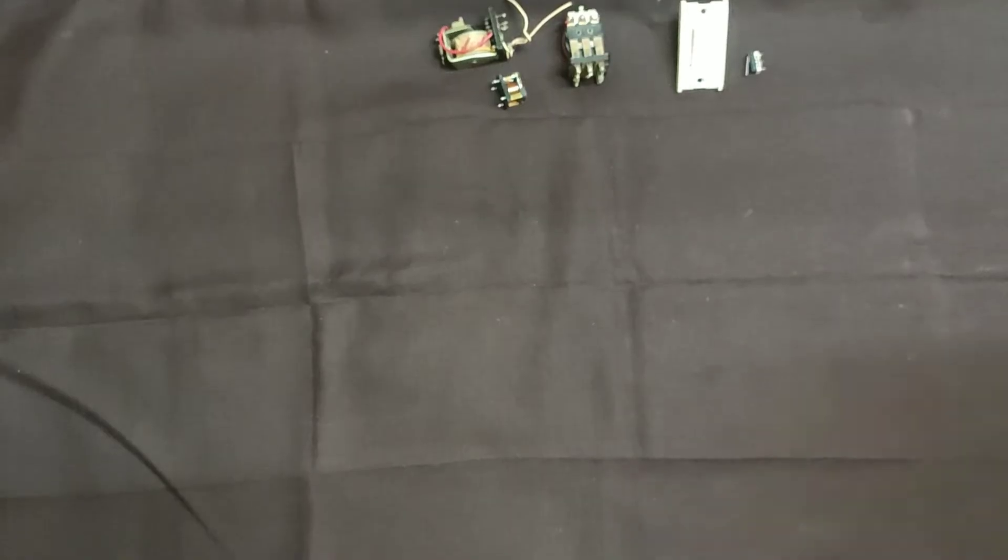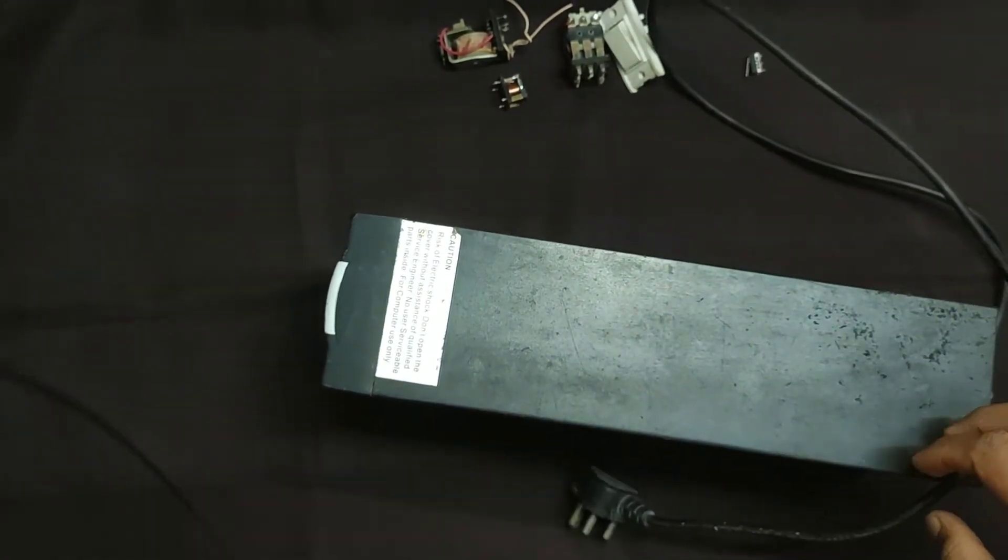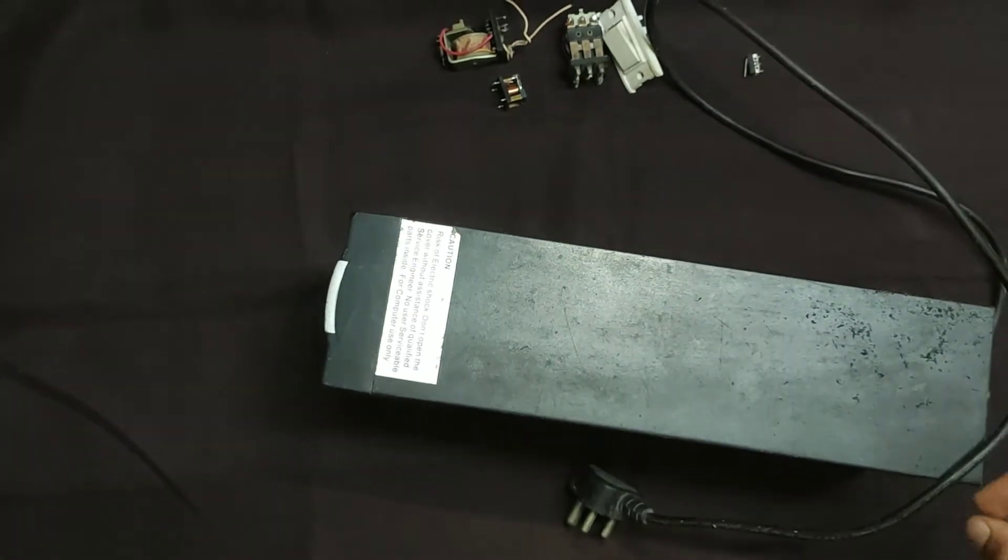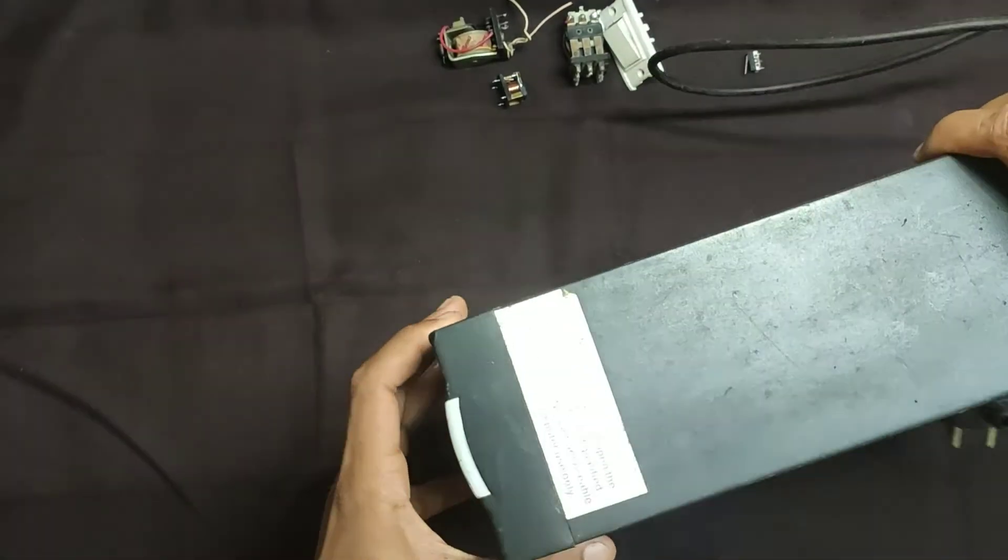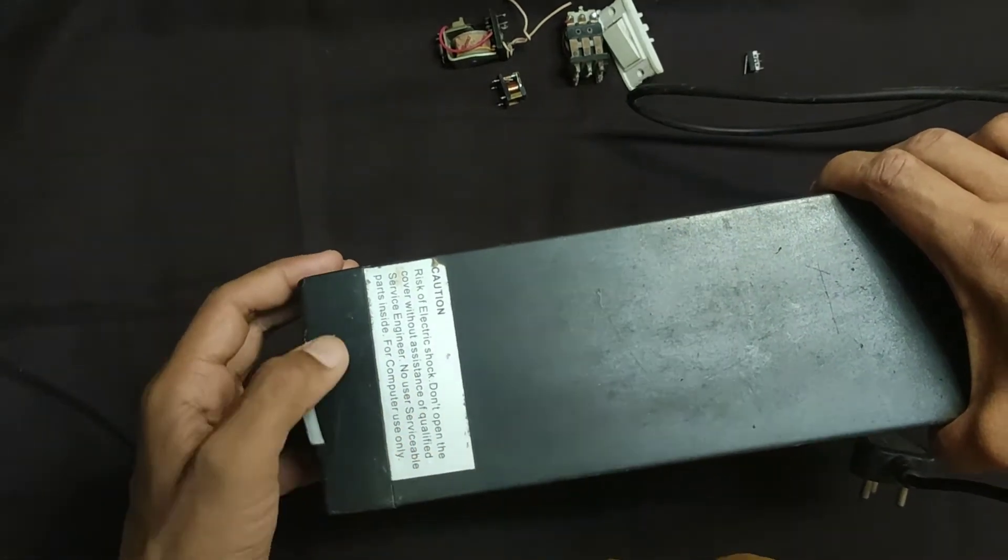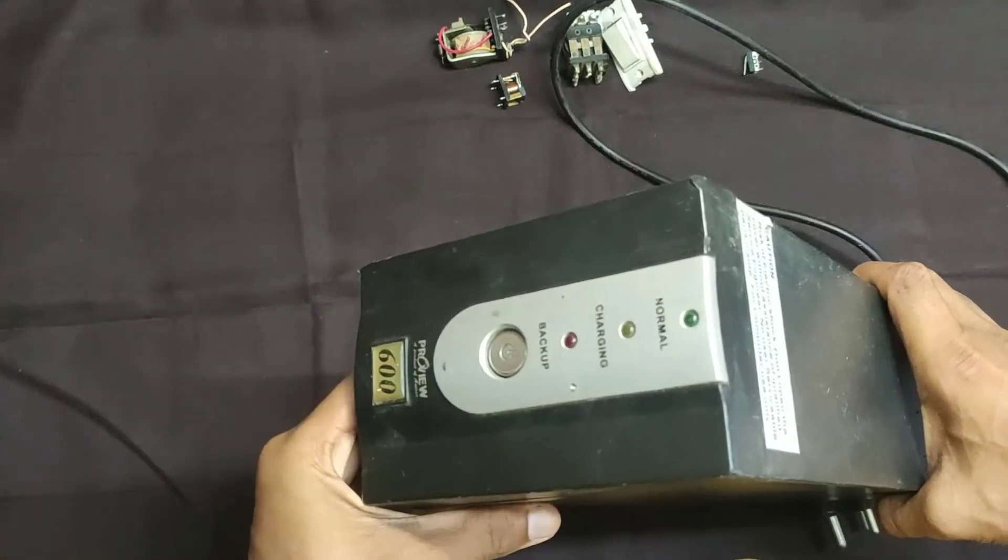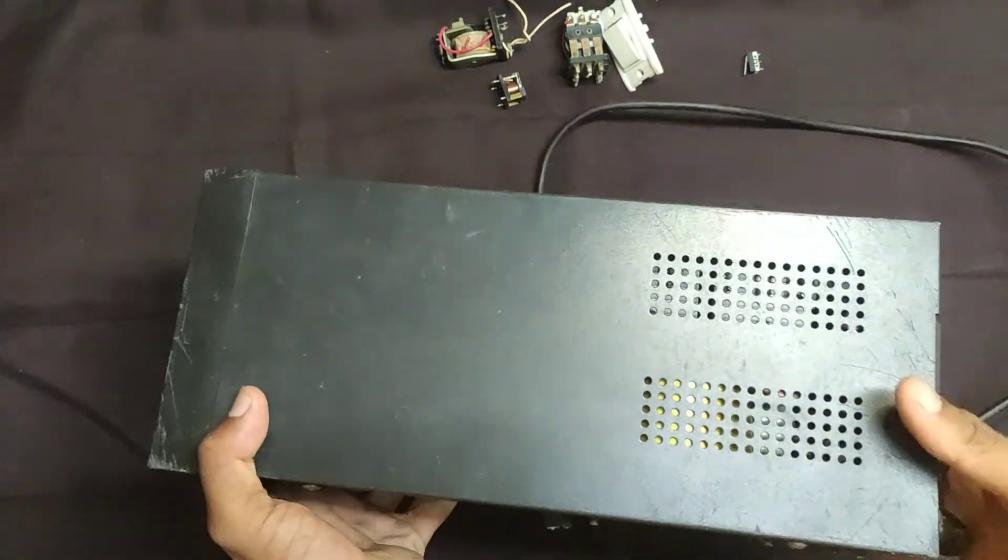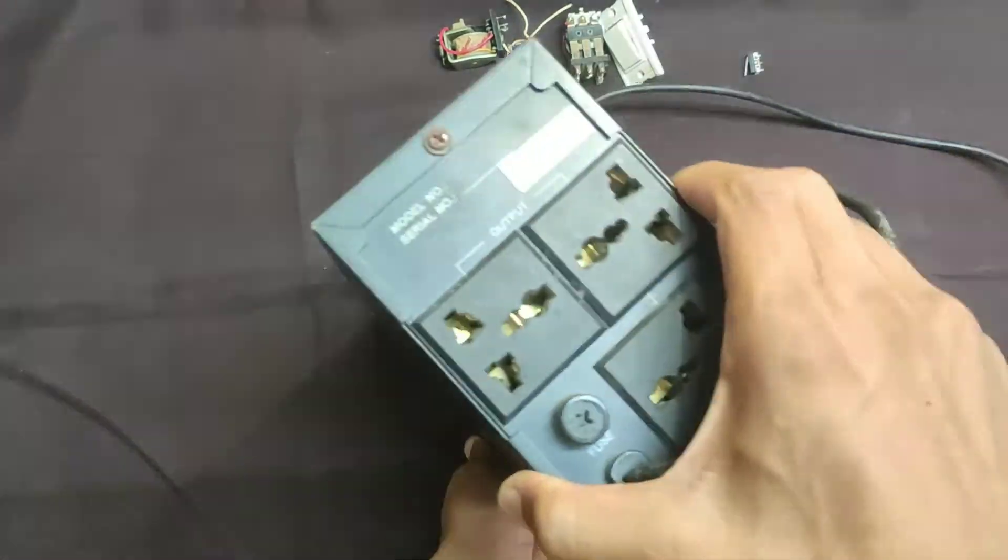Let's see where relays are used. Let's open this computer UPS and see what's inside. There is a caution: risk of electric shock. But there is no battery inside, and it is not connected to any supply. That's okay.